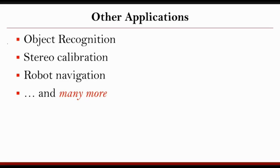There are other applications where this kind of features can be used. For example, using these features you can do object recognition. Similarly, you can do stereo calibration — for example, you have two cameras and you want to calibrate them. There is also robot navigation, similar to tracking: with the help of these feature points or keypoints, you can do navigation.